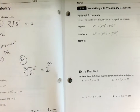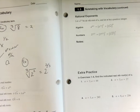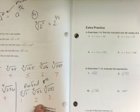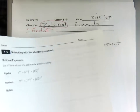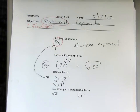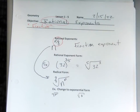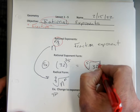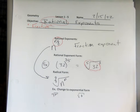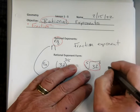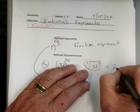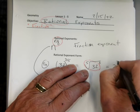We just wrote them all down. There's my 32 — 5th root of 32 is 2. So I'm going to rewrite this as 2 to the 3rd power.